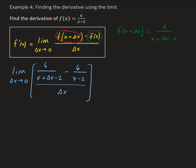If we do a direct substitution by letting delta x equal 0, then in the numerator we get 0, and we also have 0 in the denominator because delta x is approaching 0. So we get an indeterminate result, and we need to simplify this expression algebraically.